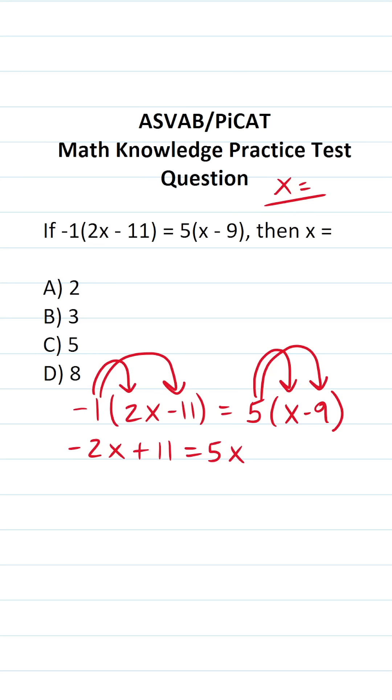a positive times a negative is going to be a negative. 5 times negative 9 is going to be negative 45. So our goal now is to move all of our x's to one side of the equation and everything else to the other side of the equation.